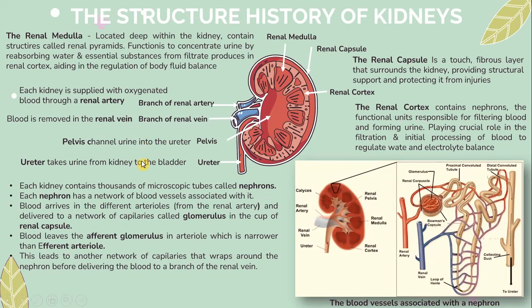Channels direct urine into the ureter. The ureter takes urine from the kidney to the bladder. The renal capsule is a tough fibrous layer that surrounds the kidney, providing structural support and protecting it from injury. The renal cortex contains nephrons, the functional units responsible for filtering blood and forming urine, playing a crucial role in filtration and initial processing of blood to regulate waste and electrolyte balance.